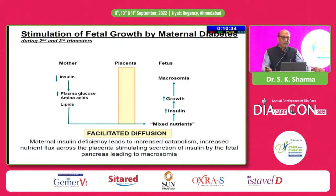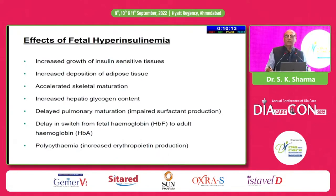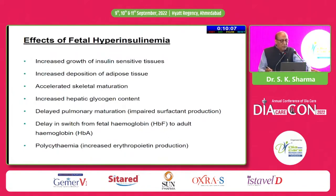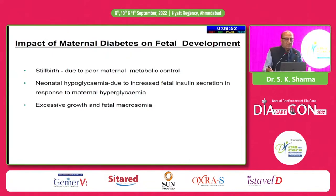The fetal pancreas starts producing insulin after 10 weeks of pregnancy. In the presence of high inflow from the mother, you will have a huge amount of increased growth, which leads to macrosomia in the fetus. This fetal hyperinsulinemia, due to excess glucose transfer, leads to increased growth of insulin-sensitive tissues, accelerated skeletal maturation, increased hepatic glycogen deposition, delayed pulmonary maturation, and delayed switch from fetal hemoglobin to adult hemoglobin.